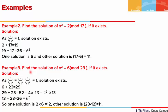In the third example, we are asked to find the solution of X squared is congruent to 6 mod 23, if it exists. We first check whether the solution exists. The Legendre symbol (6/23) is written as (2/23)(3/23), which equals 1. So the solution exists.